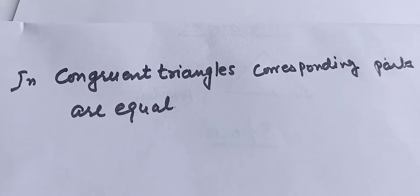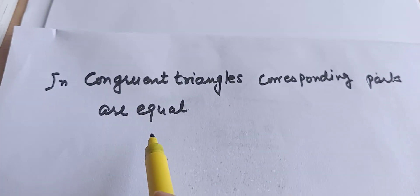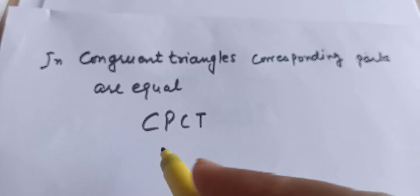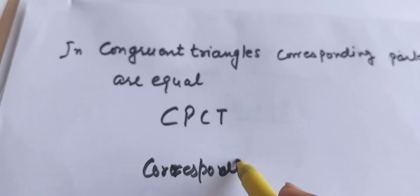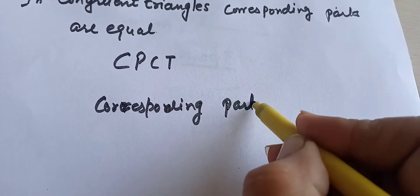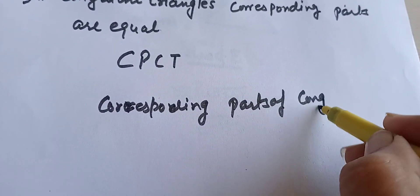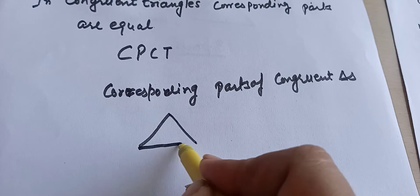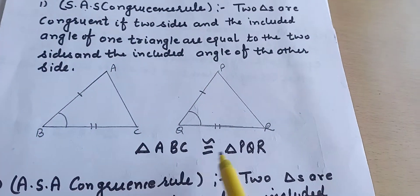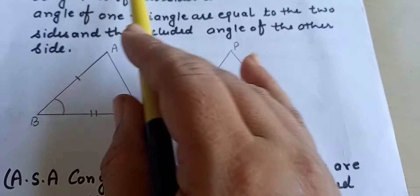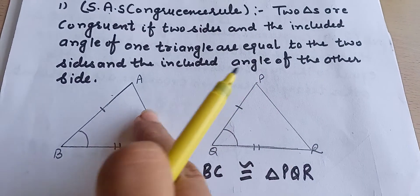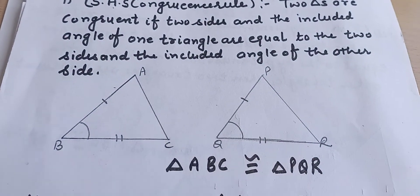Now there is one more important point. In congruent triangles, corresponding parts are equal. In short form, we say CPCT — Corresponding Parts of Congruent Triangles. You have done this in class 7th also. For example, if triangle ABC is congruent to triangle PQR by the SAS congruence rule, and three parts are given as equal, then we can say AC = PR by CPCT.